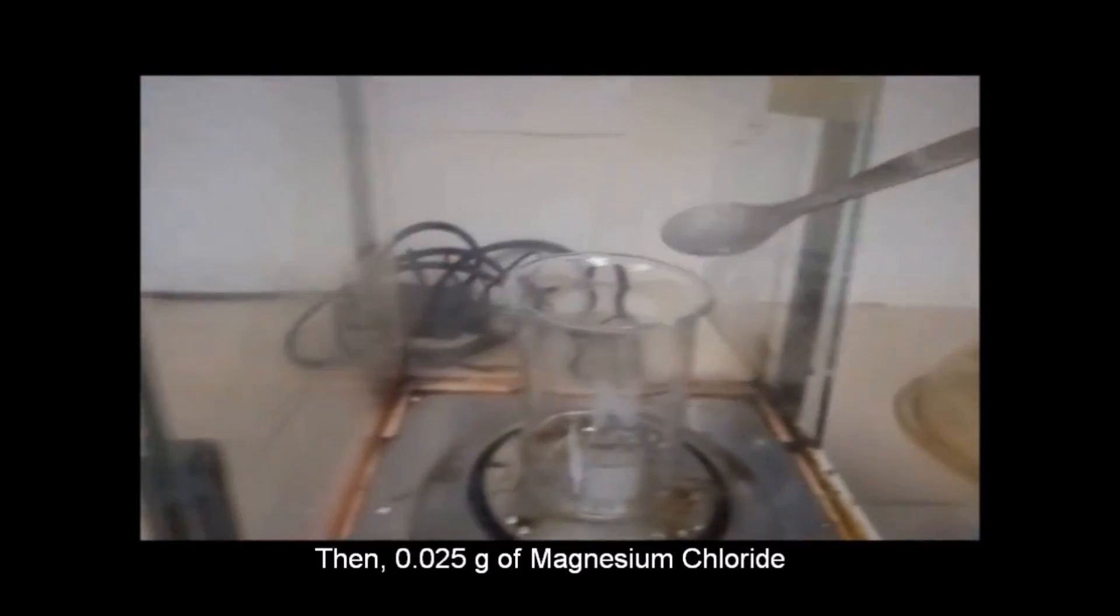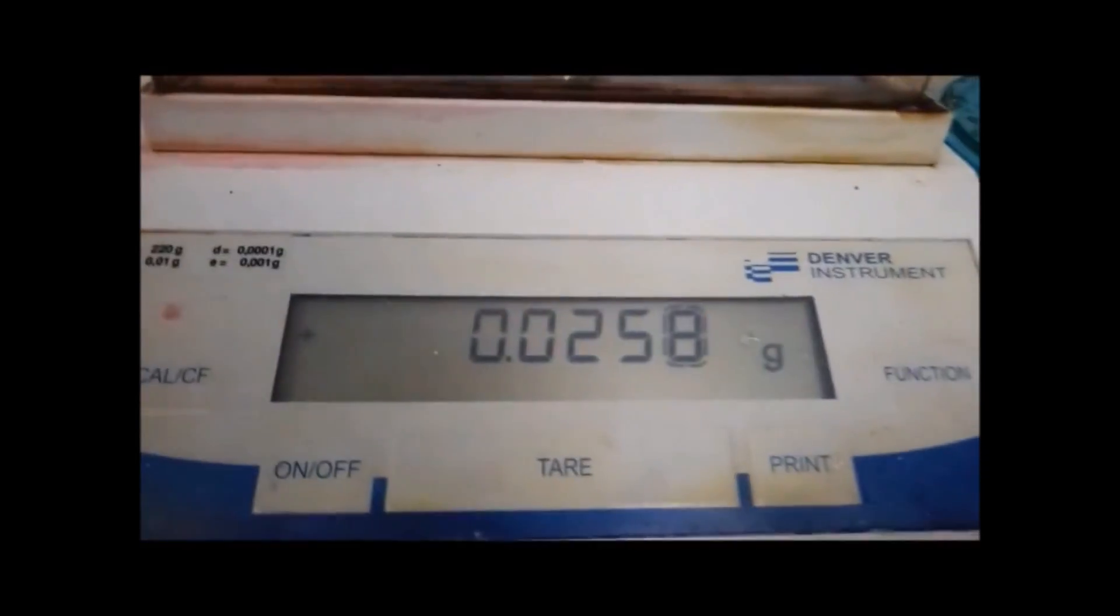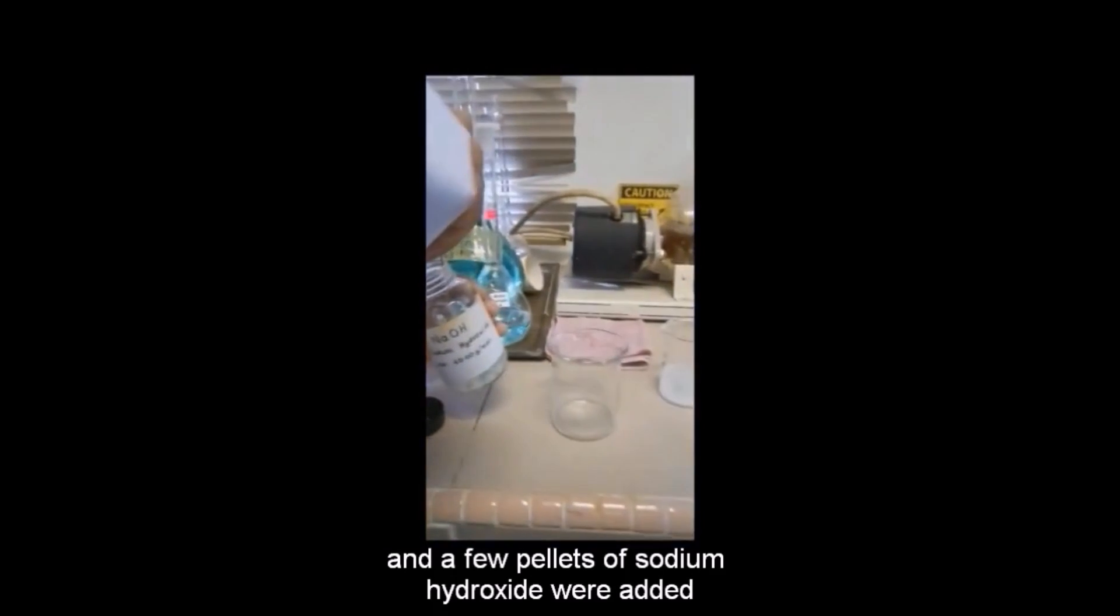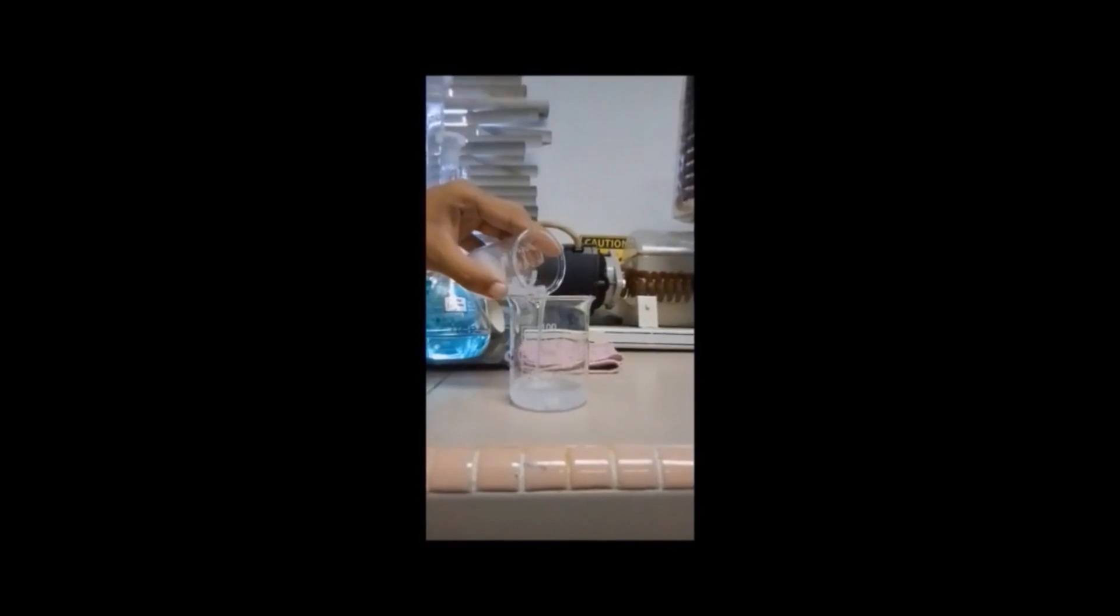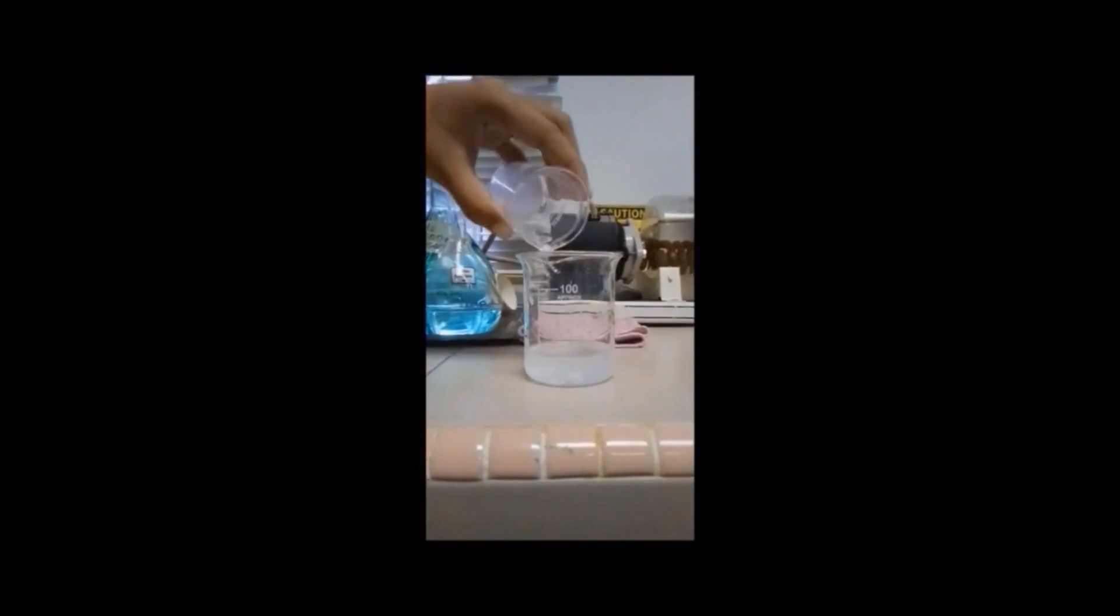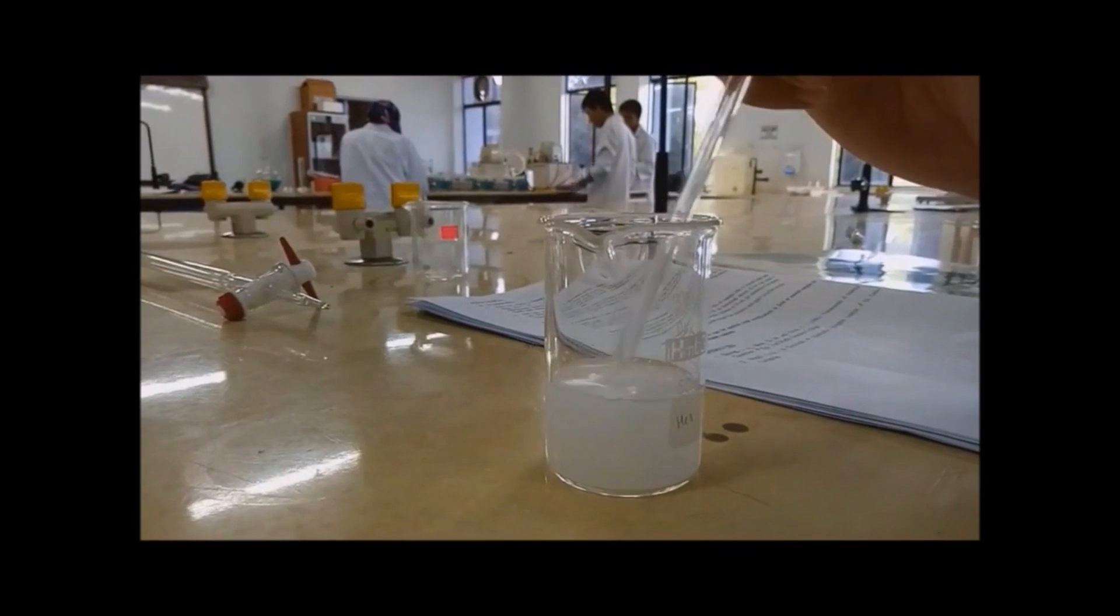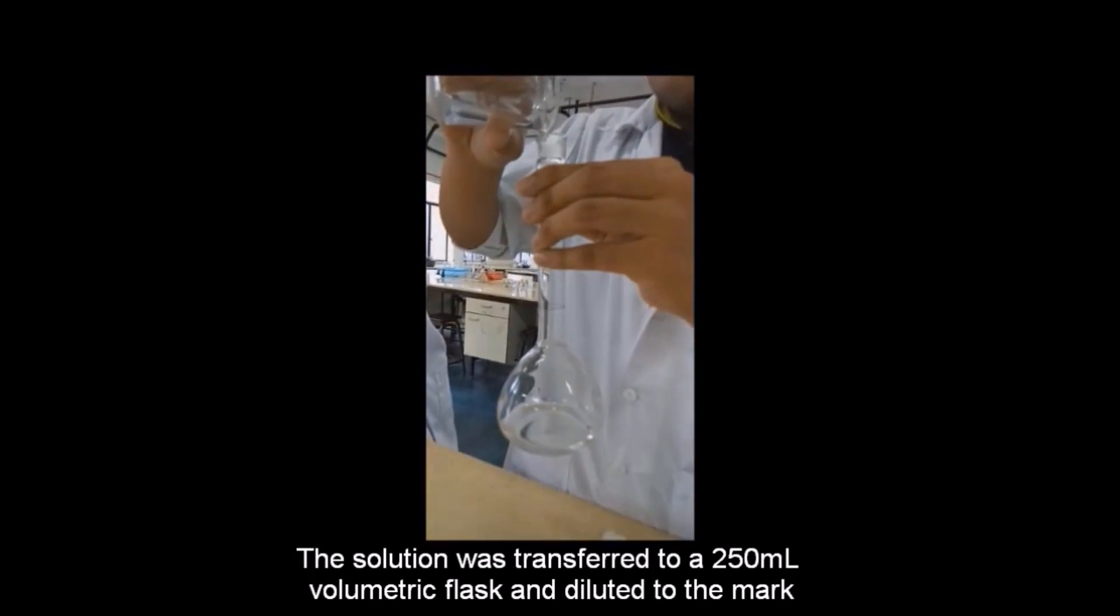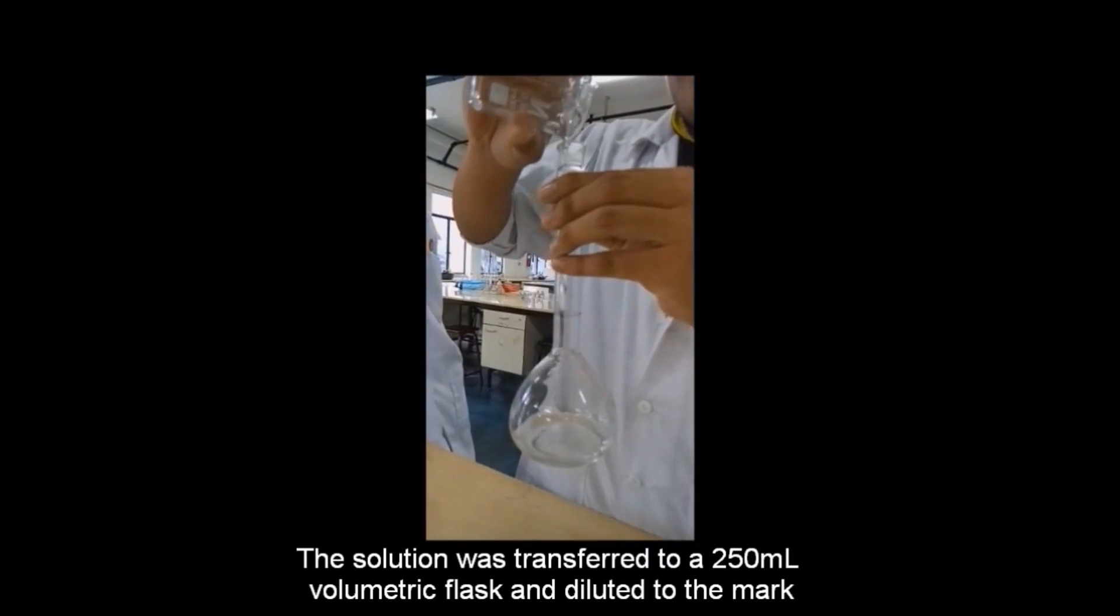A few pellets of sodium hydroxide were added. The solution was transferred to a 250 ml volumetric flask and diluted to the mark.